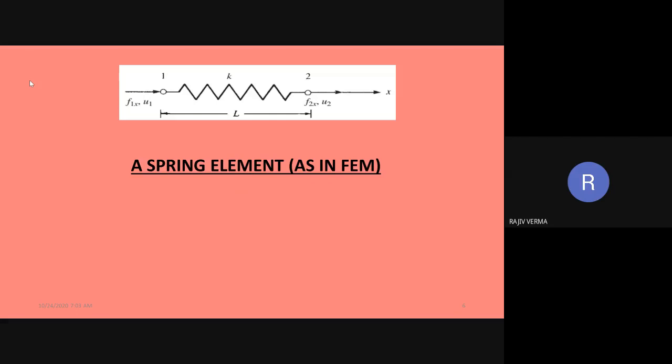In the finite element method, a spring element has two nodes located at its two ends. The left node is node number 1 and the right node is node number 2. The x-axis is always from node number 1 to node number 2. It is not necessary that the left node be node number 1 — the right node could also have been termed node number 1, in which case the positive x-axis would go from right to left.